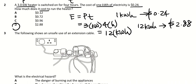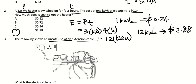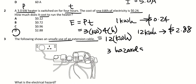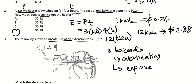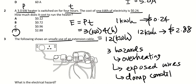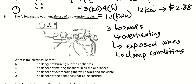Next question shows an unsafe use of an extension cable. What are the three hazards? Electric shock is a consequence, not a hazard. The hazards are overheating, exposed wires, and damp conditions. So the electrical hazard shown is overheating the wall socket. Answer is C.